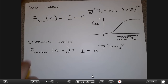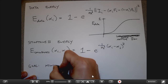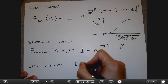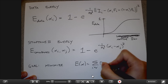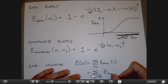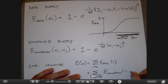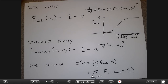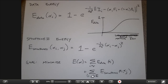My goal is to minimize the sum of the data energy plus the smoothness energy — basically the whole Gibbs energy — simultaneously across all pixels. You could also argue about whether these two terms should be weighted differently: if I want smoothness to be more important than fidelity to the matting equation, I would put a larger constant in front of the smoothness term.